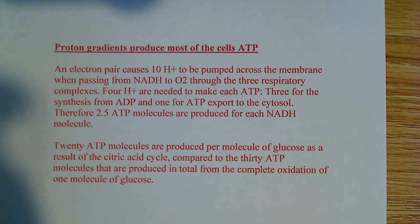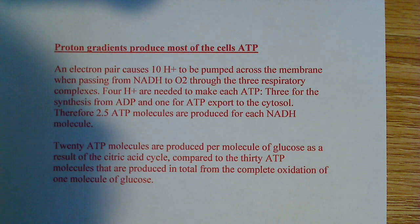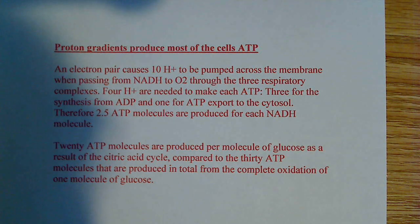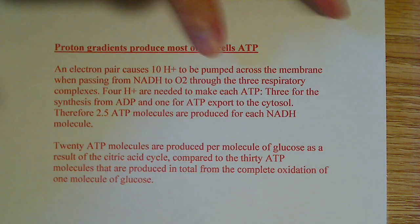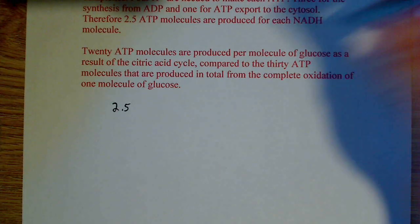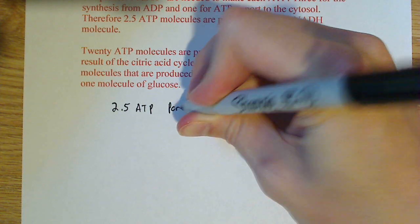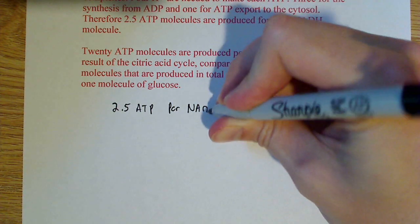And therefore, you probably, maybe people memorize this, I don't know, that 2.5 ATP molecules are produced for each NADH molecule. So basically, the way this works is, you have 2.5 ATP per NADH.